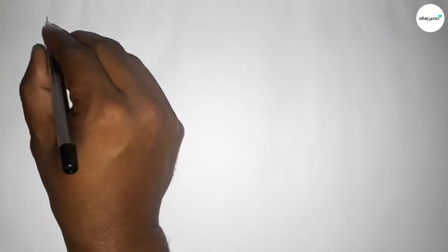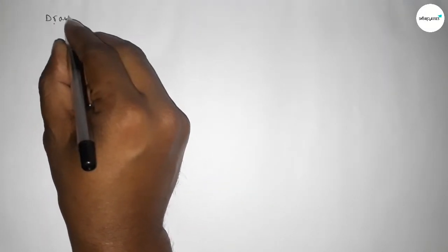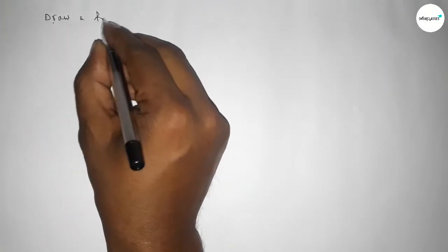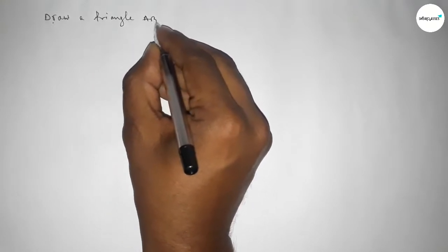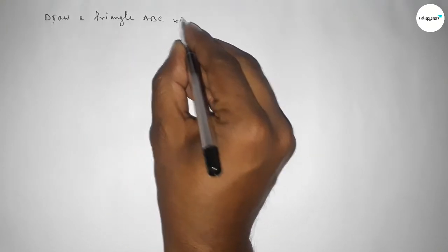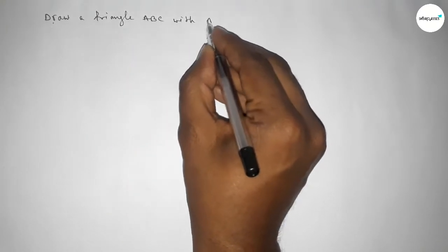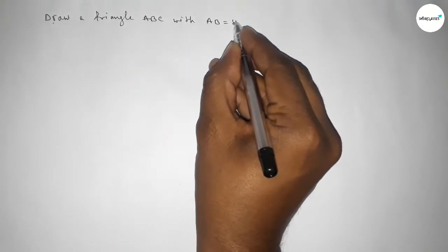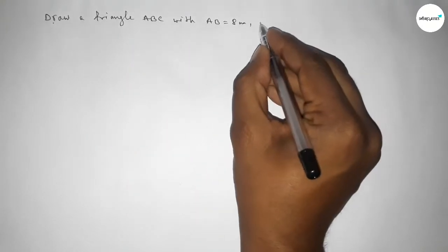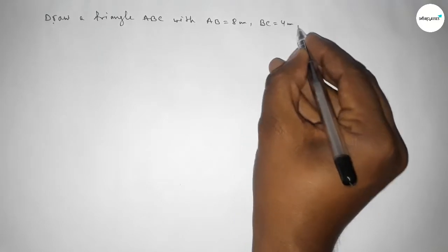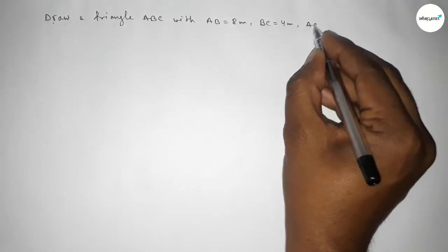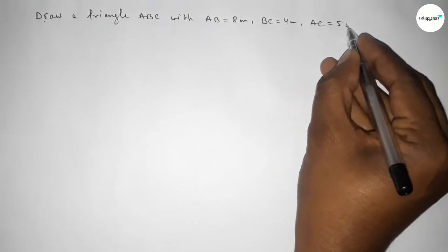Hi everyone, welcome to Essay Share Classes. Today in this video we have to draw a triangle ABC with AB equal to 8 centimeter, BC equal to 4 centimeter, and AC equal to 5 centimeter. So let's start the video.